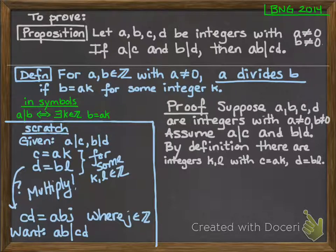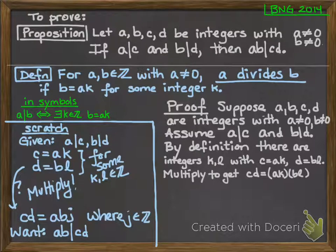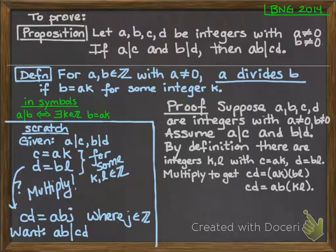Then I can go back to my scratch work again and say the next thing it said to do was to multiply. So I'll say multiply to get cd is equal to ak times bl. I'll simplify that a little bit. cd is ab times kl.